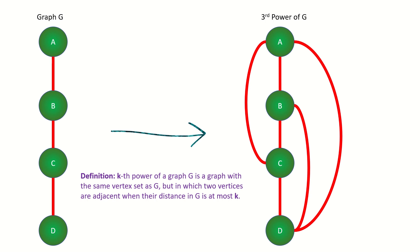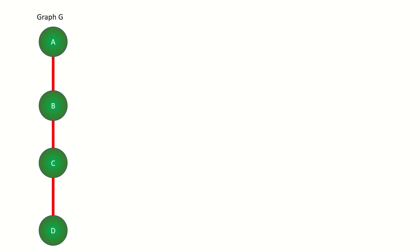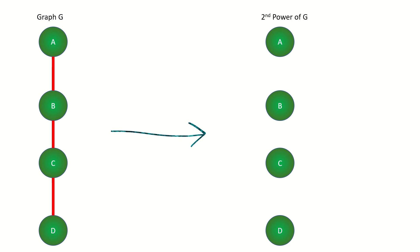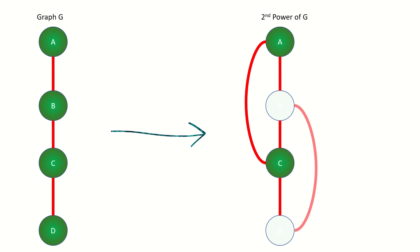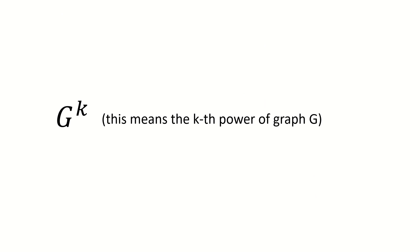For example, if we have a graph like this, to find its second power, we would copy its vertices over here, connect them all as they were in the original graph, and then connect vertices whenever they were two steps apart in the original graph. The kth power of a graph g is notated using superscript notation.